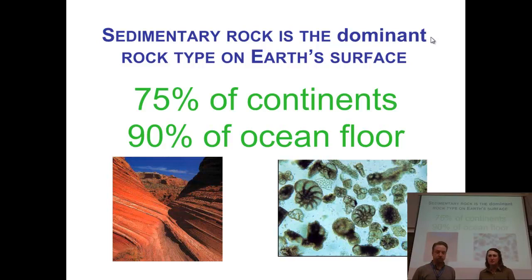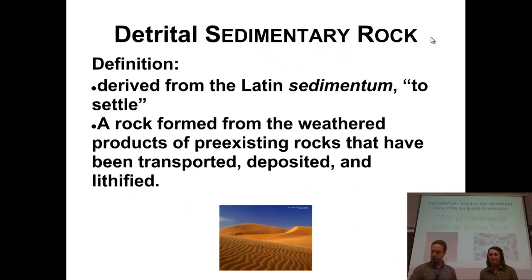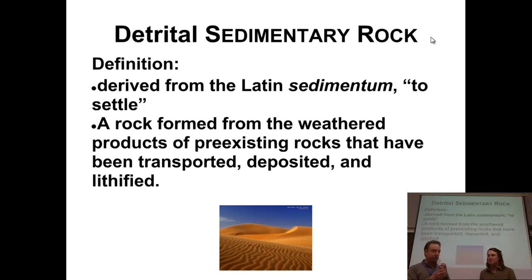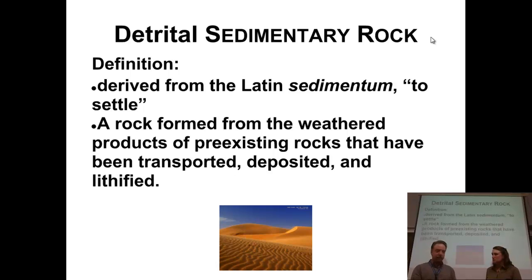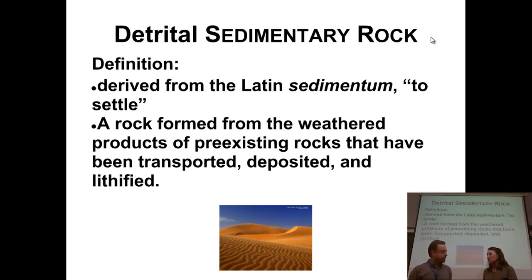So let's take a look at a few of those types of sedimentary rocks and their characteristics. The term detrital sedimentary rock — what does that exactly mean? Well, we're talking the sediment, things to settle, from that Latin word. You have a weathered product that gets left behind. Clastic means broken, detrital means to settle. So you're talking about pieces of broken things that settle and make a rock.